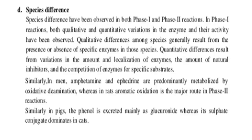For example, in humans, amphetamine and ephedrine are predominantly metabolized by oxidative deamination, whereas in rats, aromatic oxidation is the major route. In Phase 2 reactions, in pigs, phenol is excreted mainly as glucuronide, whereas its sulfate conjugate dominates in cats.